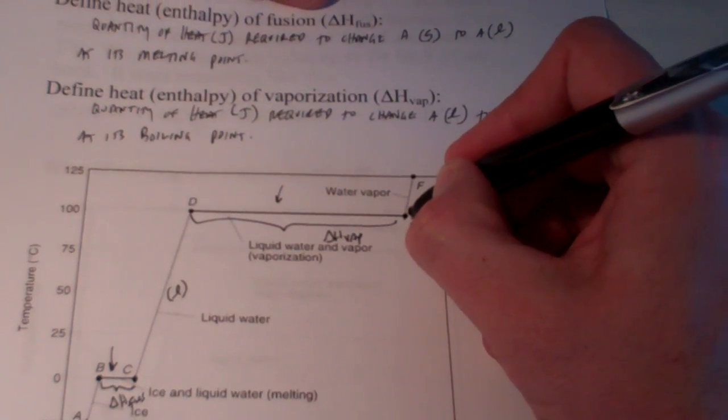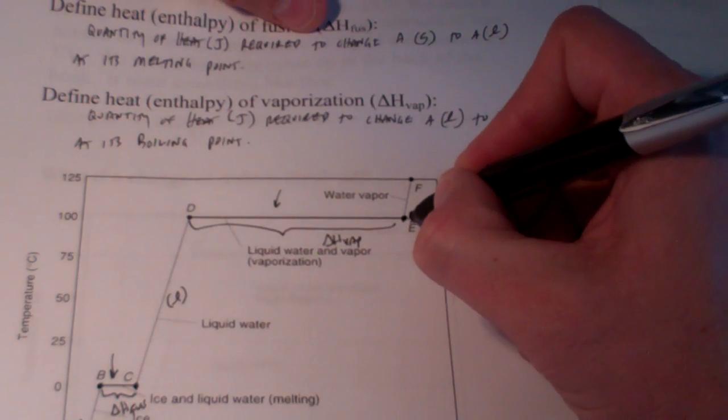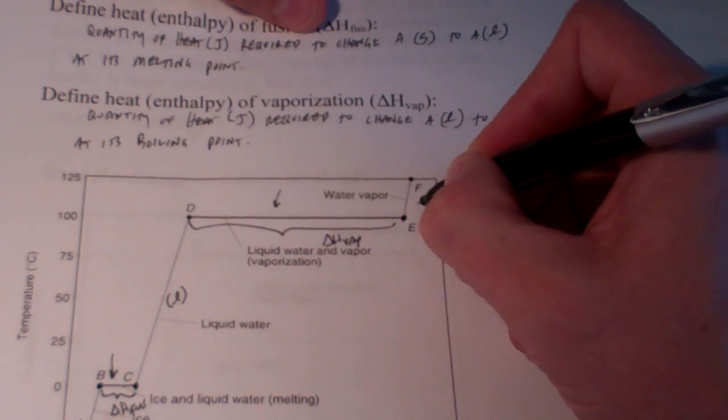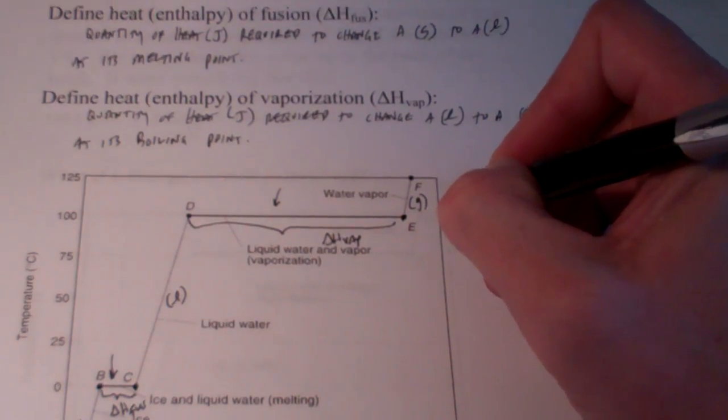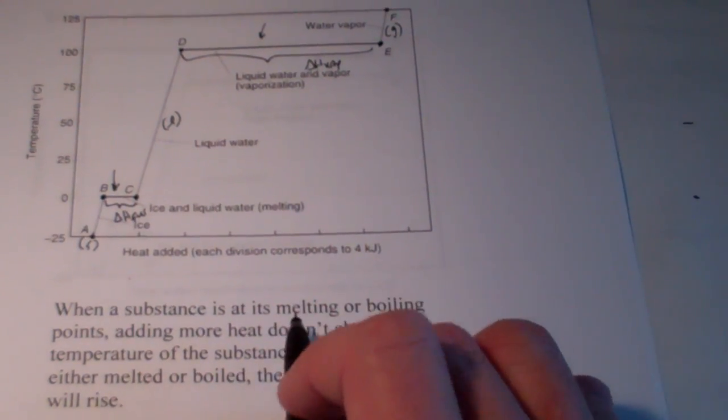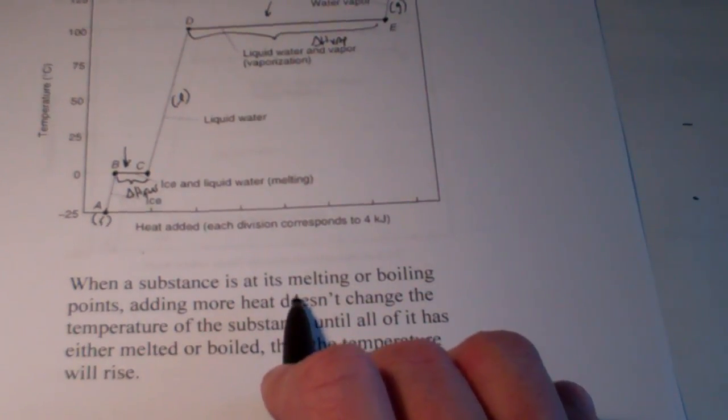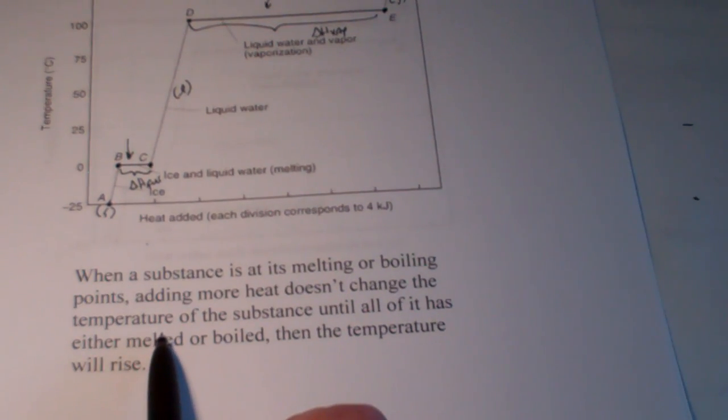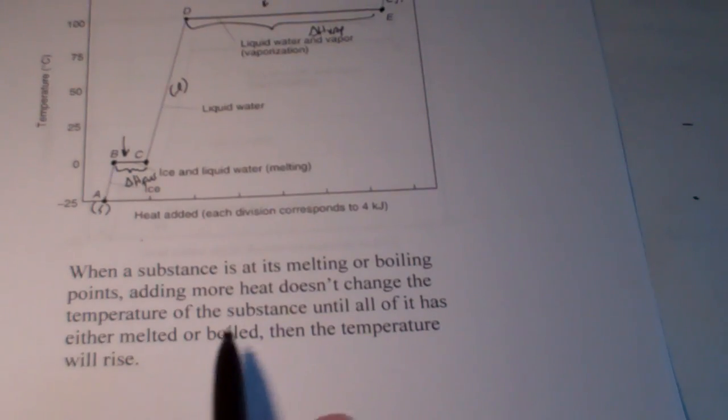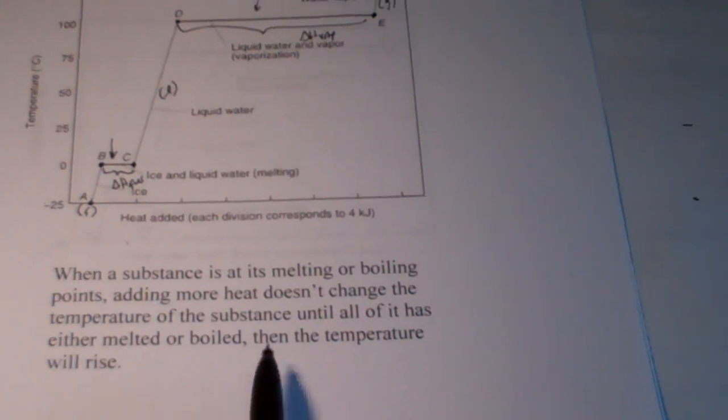Then, once we reach point E, the energy that we add raises the temperature of the vapor. So, right here, we have a gas. Now, when the substance is at its melting or boiling point, notice that adding more heat does not change the temperature. Until all of it is either melted or boiled, then the temperature will begin to rise.